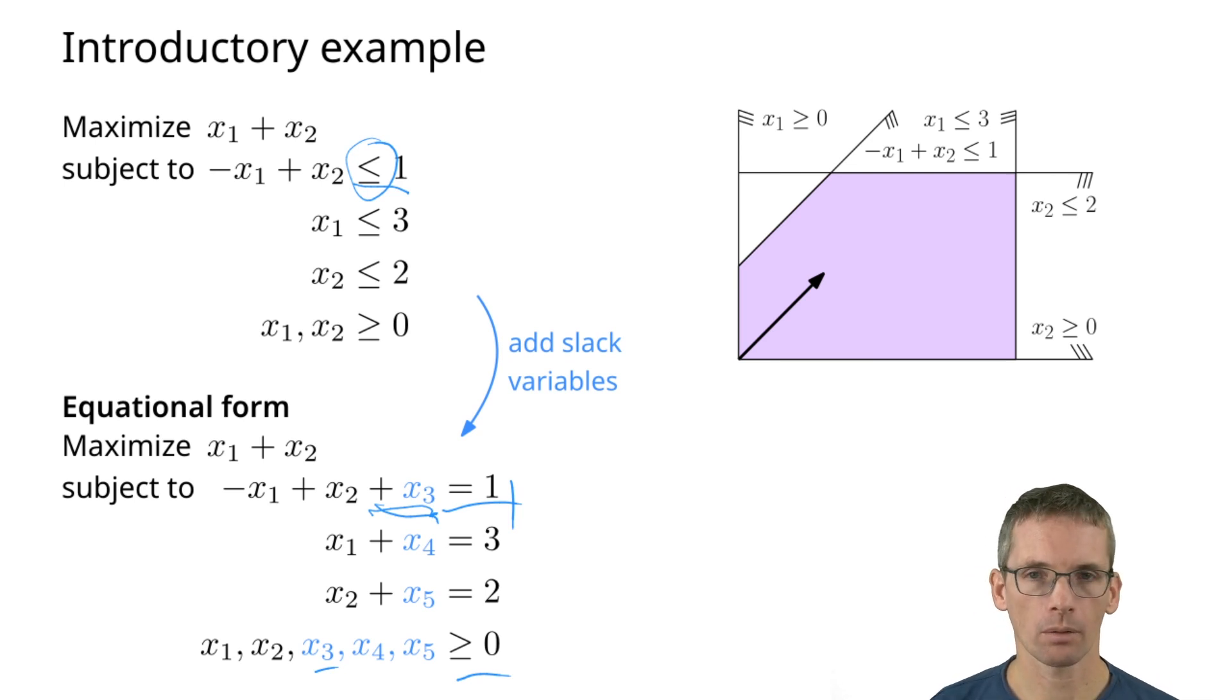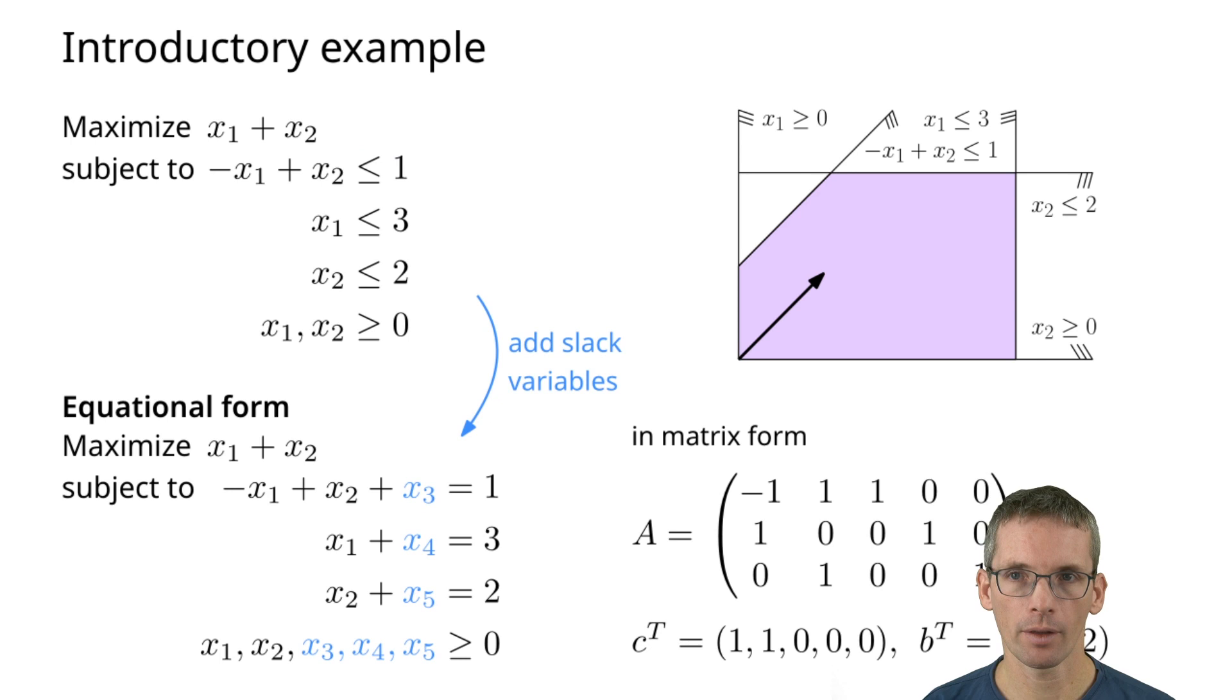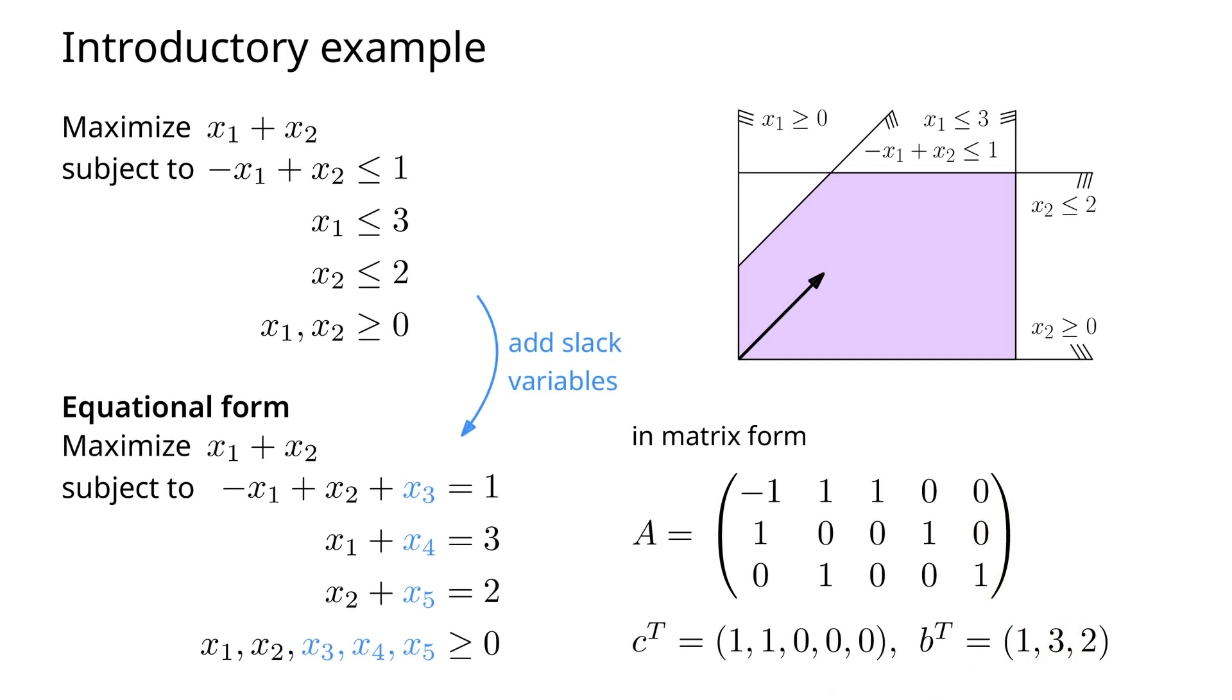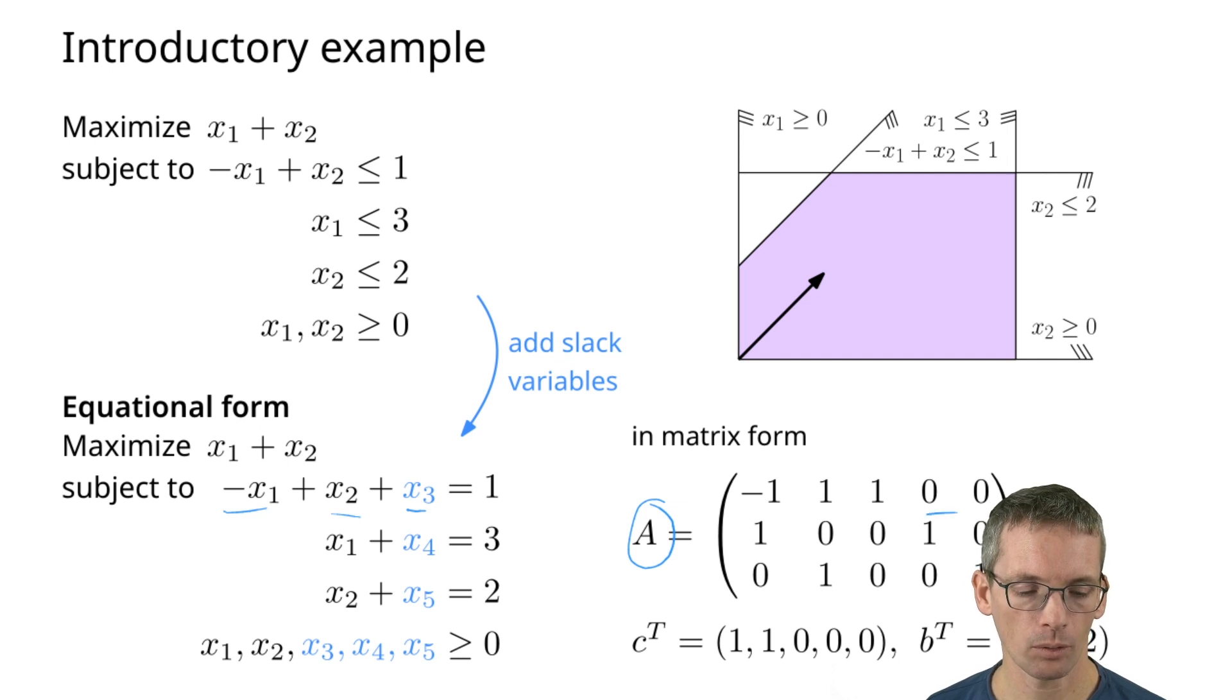We can also write it using vectors and matrices. Our matrix A here, if you look at the first equation, we have minus 1, 1, 1, x4 and x5 don't show up, so 0, 0, and so on.